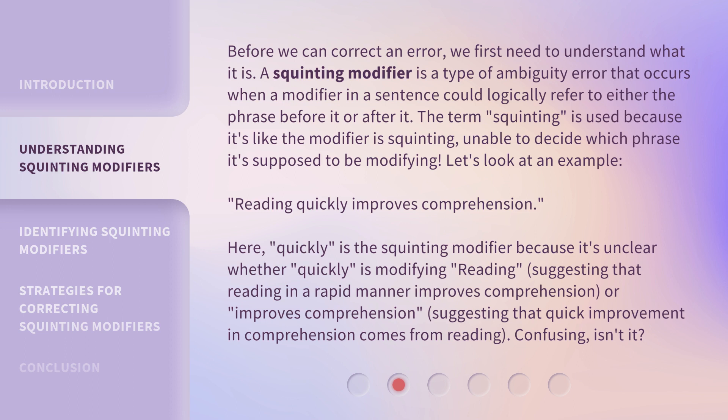Let's look at an example: "Reading quickly improves comprehension." Here, "quickly" is the squinting modifier because it's unclear whether "quickly" is modifying "reading" — suggesting that reading in a rapid manner improves comprehension — or "improves comprehension" — suggesting that quick improvement in comprehension comes from reading. Confusing, isn't it?